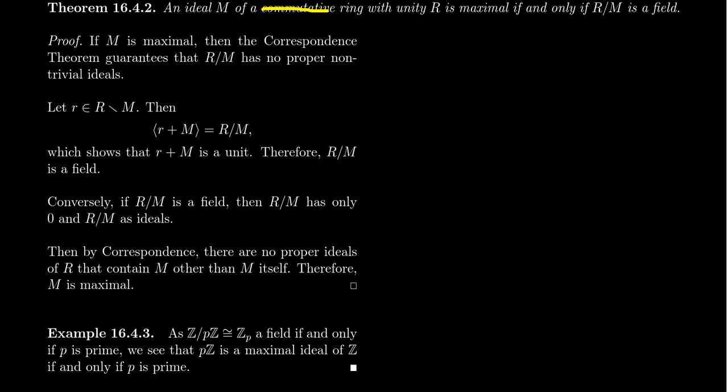The commutativity there isn't necessary. You can also even drop the word with unity, in which case we can talk about a maximal ideal, in which case in that situation, what you get is M is a maximal ideal of R if and only if R mod M is a so-called simple ring, meaning it doesn't have any ideals other than zero and the whole thing.